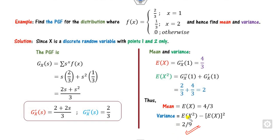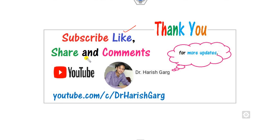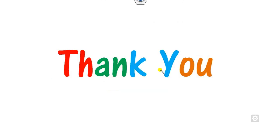So this is the way you can compute the mean and variances. Remember these two simple formulas. We will see in our next class how you can state the various properties of the probability generating functions. Till then, please like, subscribe, share and comment on this video on the channel Dr. Harish Gar. Best of luck students. Thank you.